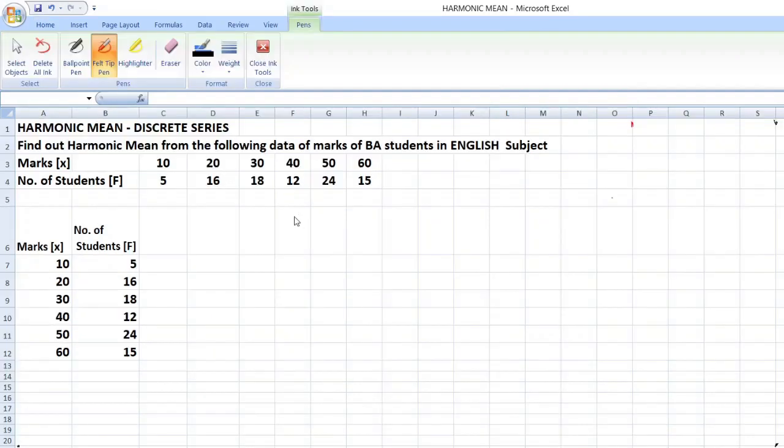So, to find out harmonic mean in discrete series, first you have to know the formula. What is the formula? The formula is harmonic mean is equal to n by summation f into 1 by x. Summation f into 1 by x.